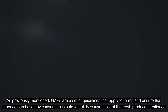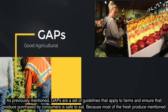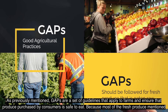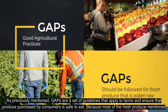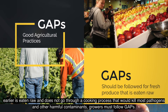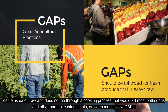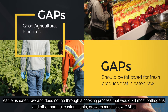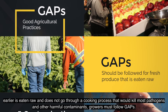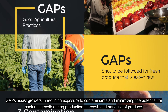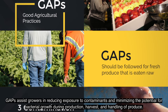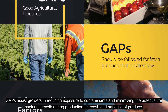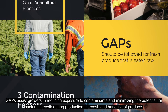GAPs are a set of guidelines that apply to farms and ensure that produce purchased by consumers is safe to eat. Because most fresh produce is eaten raw and does not go through a cooking process that would kill most pathogens and other harmful contaminants, growers must follow GAPs. GAPs assist growers in reducing exposure to contaminants and minimizing the potential for bacterial growth during production, harvest, and handling of produce.